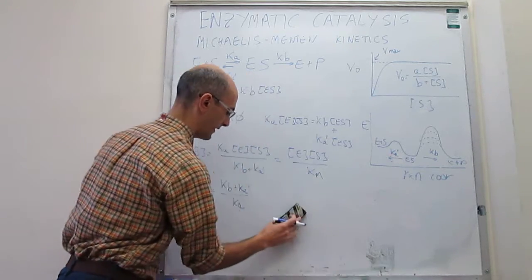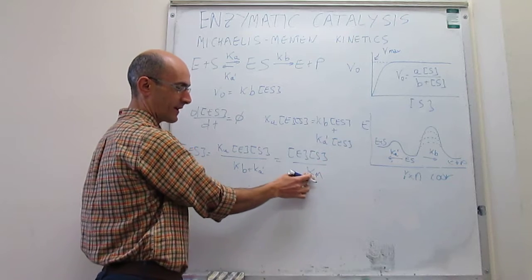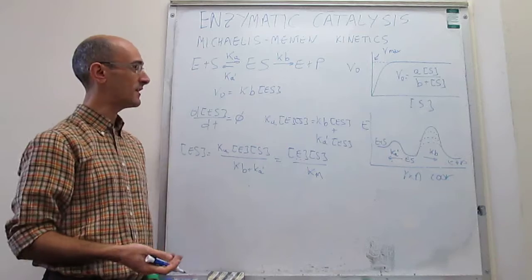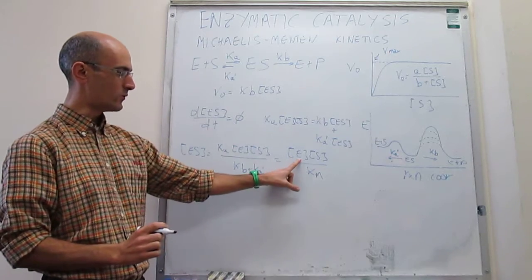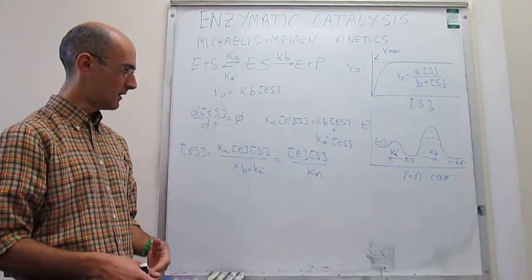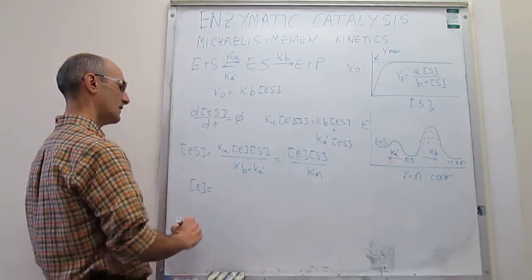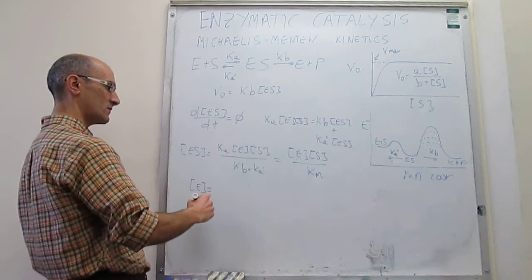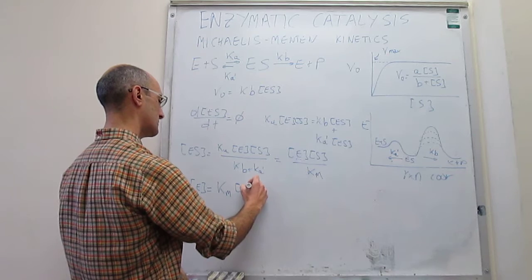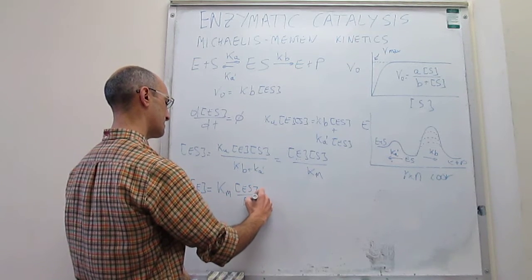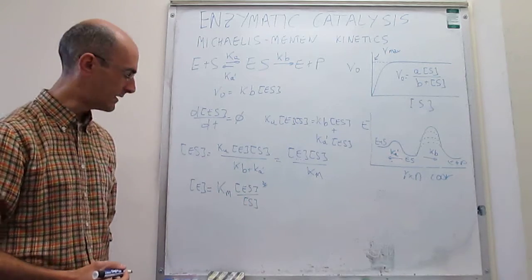To eliminate [E], we use the mass balance of the enzyme, as done before. Solving the [ES] expression for [E] gives [E] = K_M [ES] / [S]. We'll mark this equation with an asterisk, as we'll return to it later when studying enzyme inhibition.